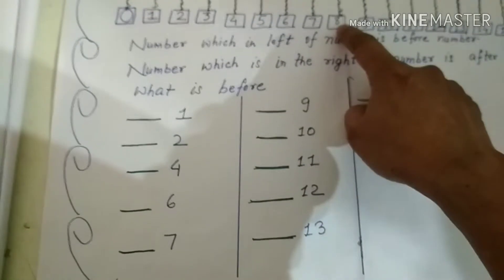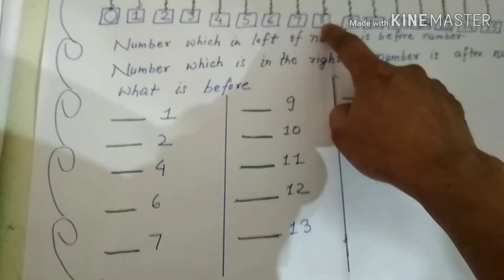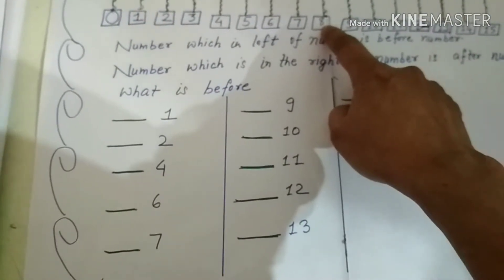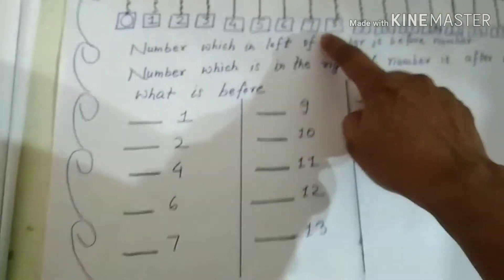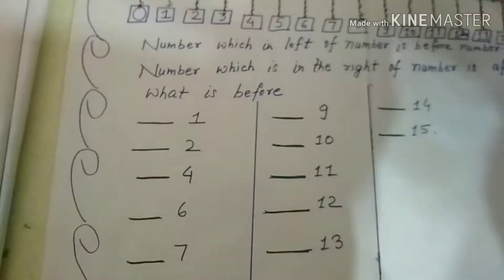What is before 8? 7. Where is 7? Here. Very good. Now, some questions.